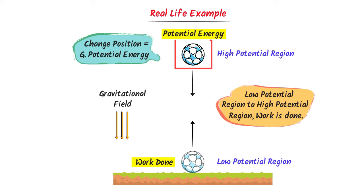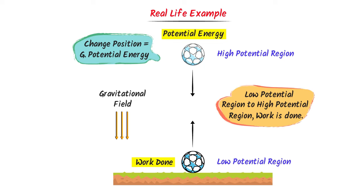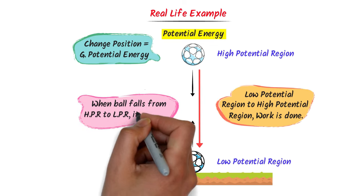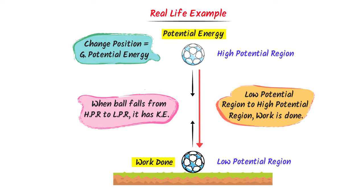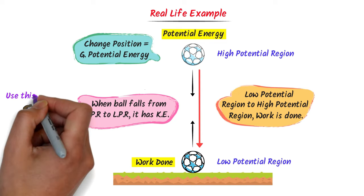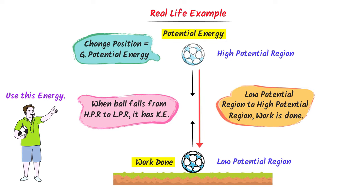Finally, if I release this ball from a high potential region, it will accelerate towards the ground. Here is one very important point: when this ball falls from high potential region towards low potential region, it possesses kinetic energy due to its motion and we can utilize that kinetic energy. So the third fact is: objects fall from high potential region to low potential region due to potential energy, and we can utilize their energy.